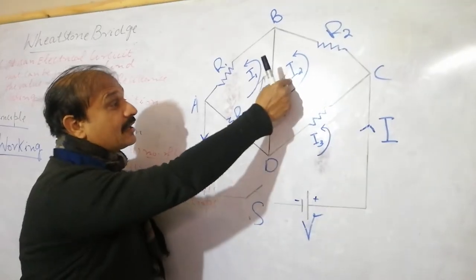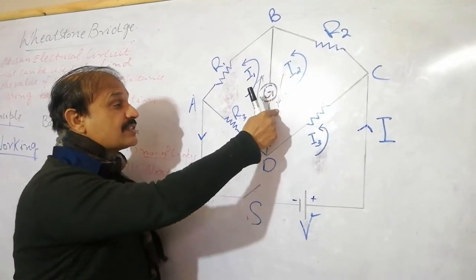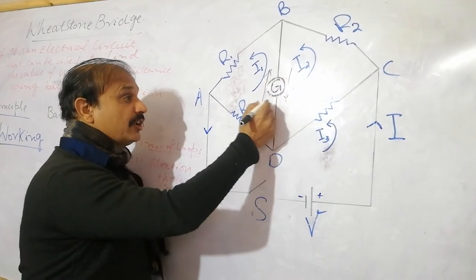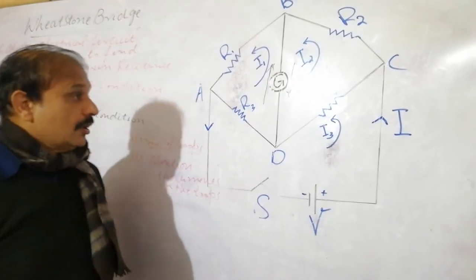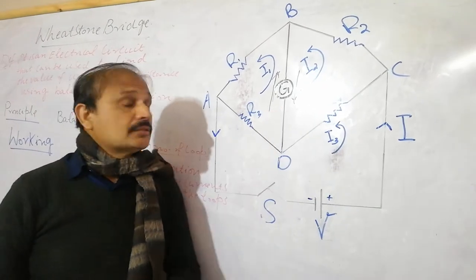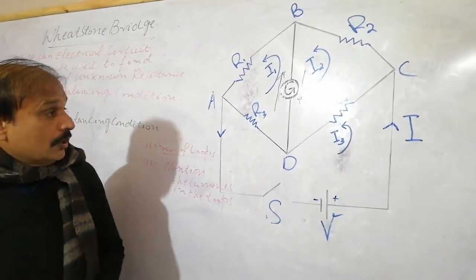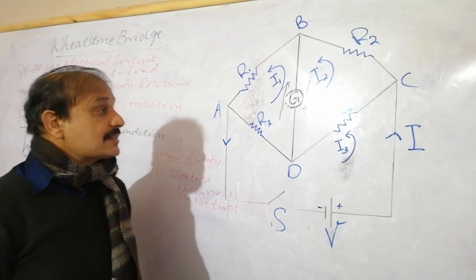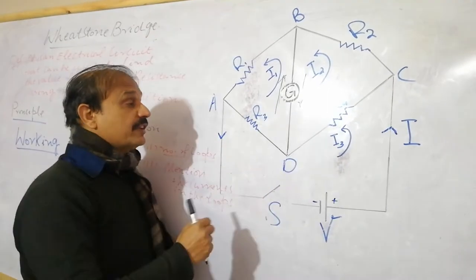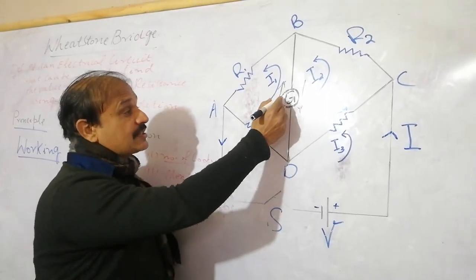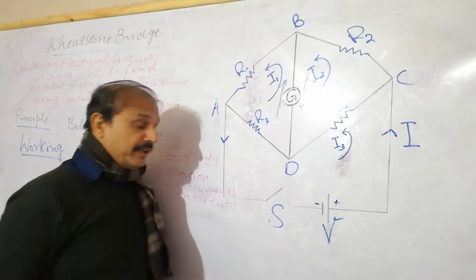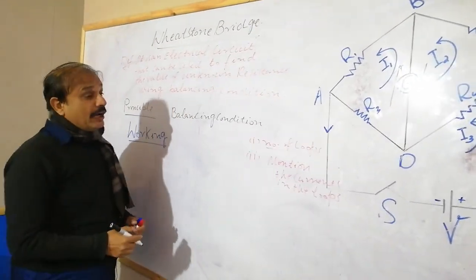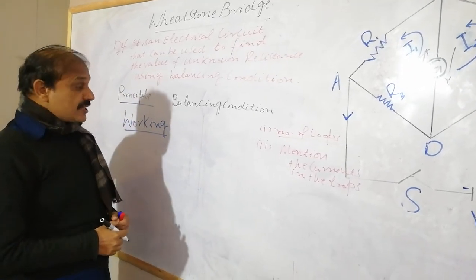The current I2 is passing through the galvanometer in the downward direction, while I1 passes in the upward direction. If you ask what is the net current, the answer is zero, because we adjust the values of the resistance so that we have the same values of current. That's why the net current in the galvanometer is zero. Now we have to derive the equations.